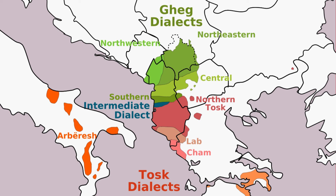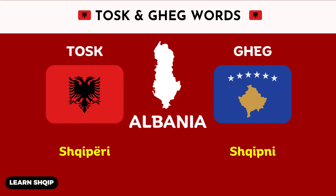Now, without further ado, let's start with the first two words for today. The first word is Albania. In the Tosk dialect you will say Shiperi, and then in Geg you are going to change it to Shqipni.